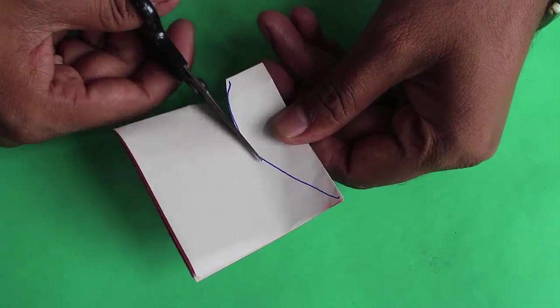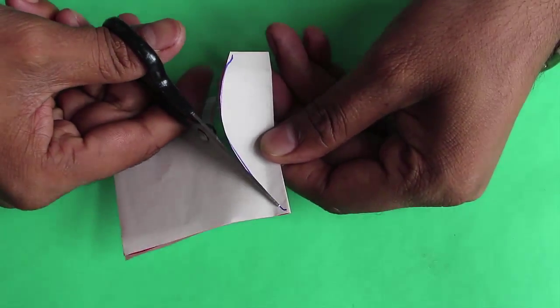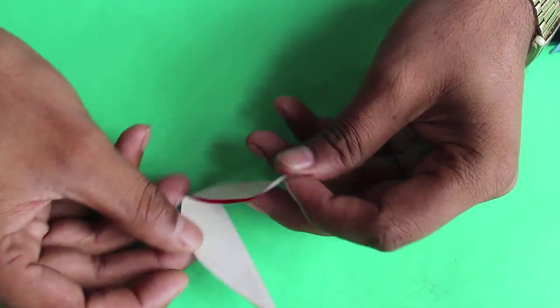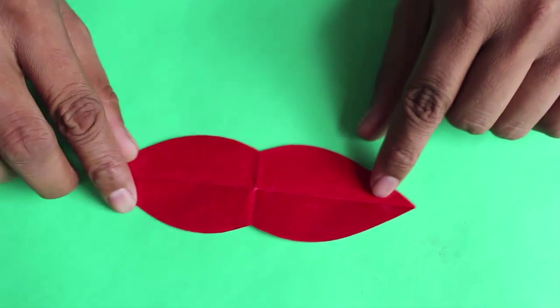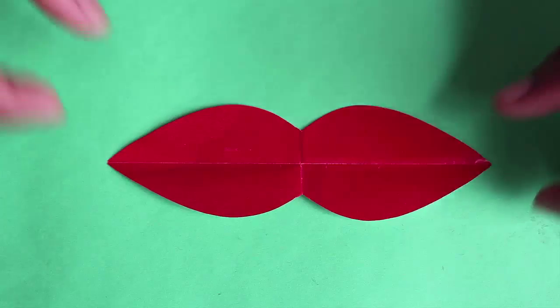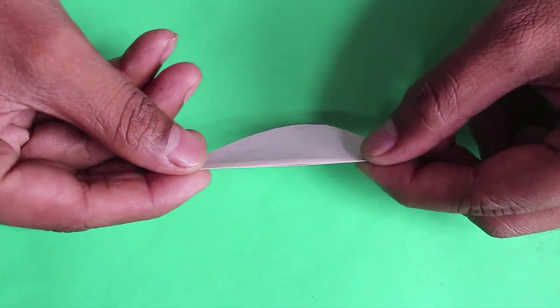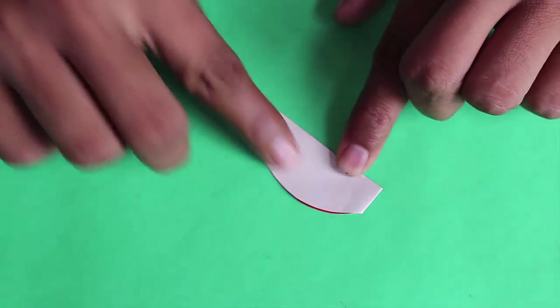Then just make a simple half leaf and cut this leaf. Because there are four layers in the paper, on opening it, it will look almost like the lips or two leaves.